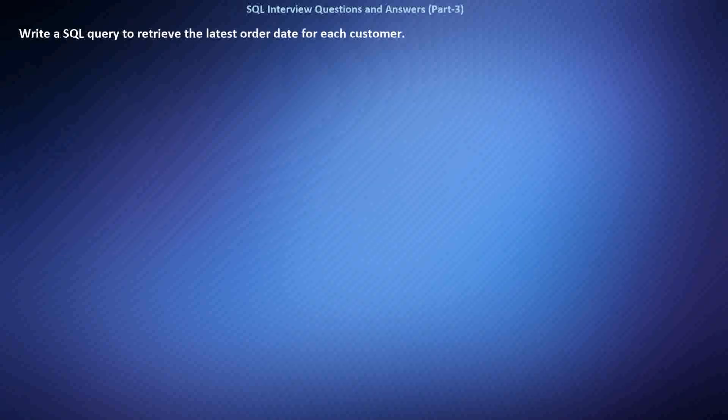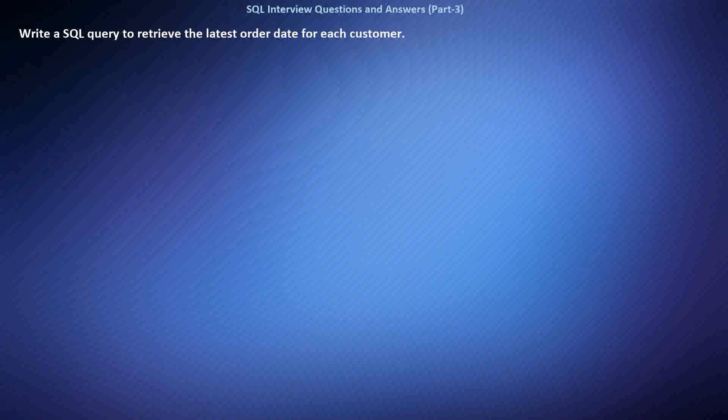Write a SQL query to retrieve the latest order date for each customer. We have a table named Orders containing information about orders placed by customers, including the customer ID and order dates. We want to find the latest order date for each customer.